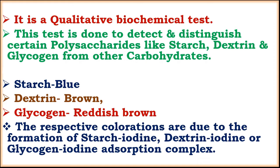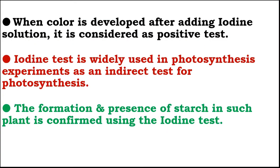These colorations are due to the formation of starch-iodine, dextrin-iodine, or glycogen-iodine adsorption complexes. The color is developed after adding iodine solution and is considered a positive test. The iodine test is widely used in photosynthesis experiments as an indirect test for photosynthesis.